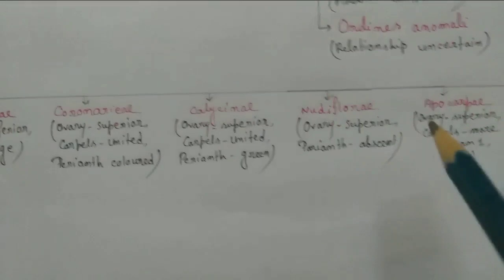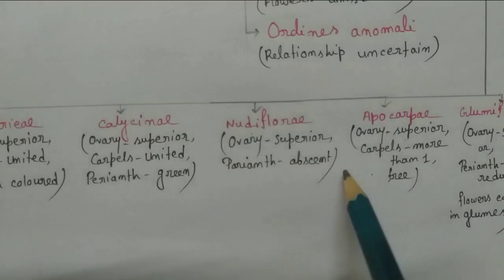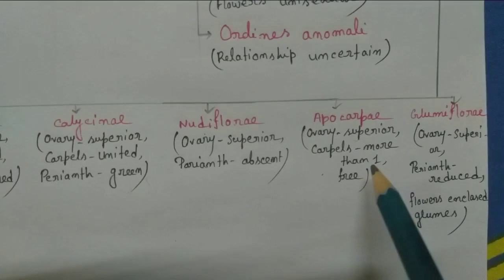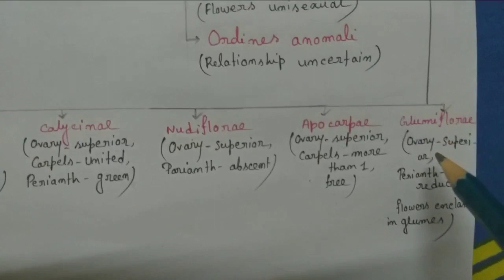Next, Nudiflorae, where the ovary is superior but perianth is absent. Next, Apocarpeae, where the ovary is superior, carpels more than one and free.